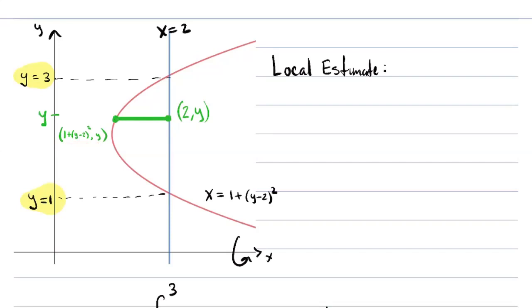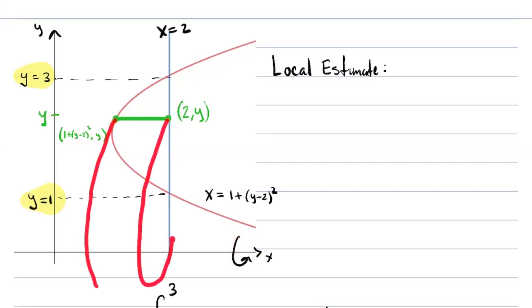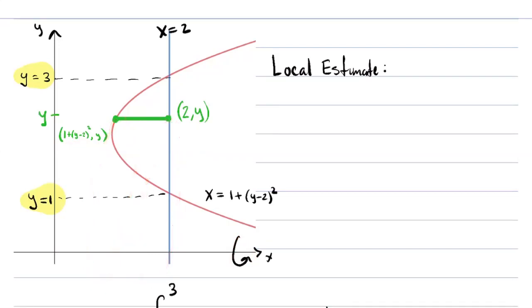If I take this green segment at height y — I think of the thickness of the pen as my delta y — that green segment, when we rotate it around the x-axis, is going to swing out a cylindrical shell. So what do we need to know to find the volume of that shell? We need to know the radius, because we have to multiply by 2π.